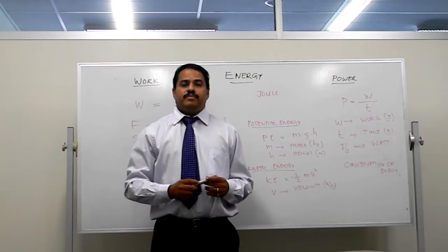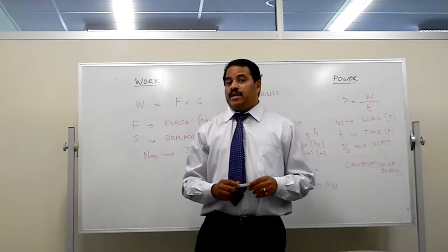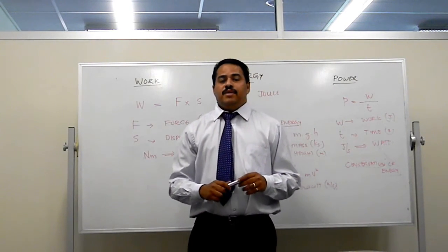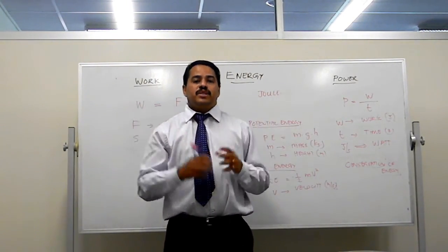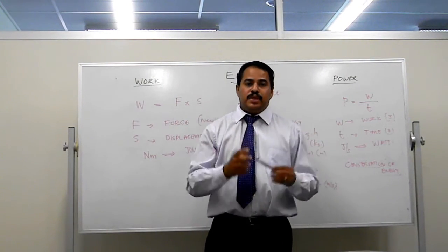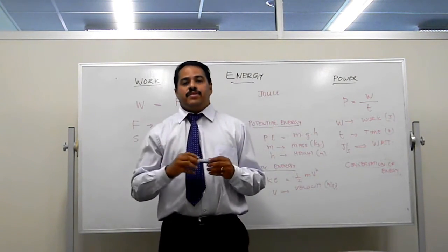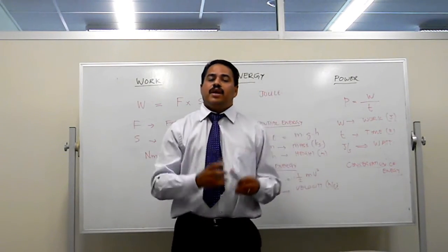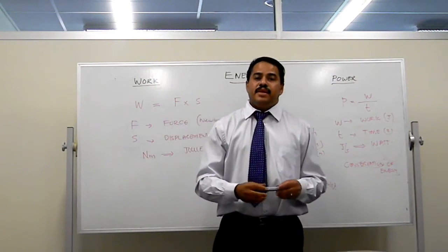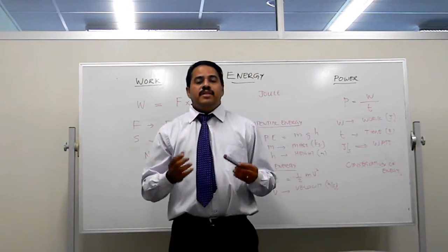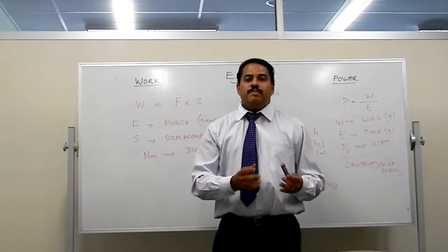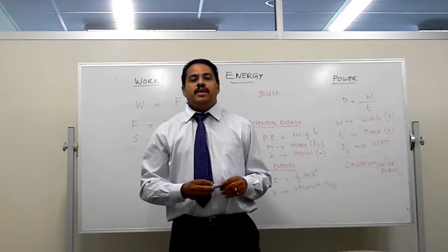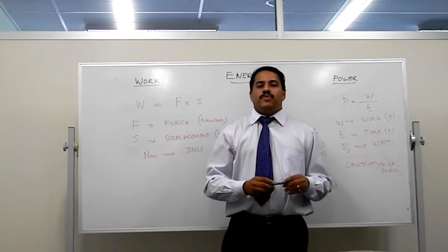For example, in a hydroelectric power plant, there are many energy conversions. The water stored in a dam has potential energy. While it is flowing through the tunnel, the potential energy is getting converted into kinetic energy. Then this energy is transferred into turbine and generator which produces electricity, which is also another form of energy.